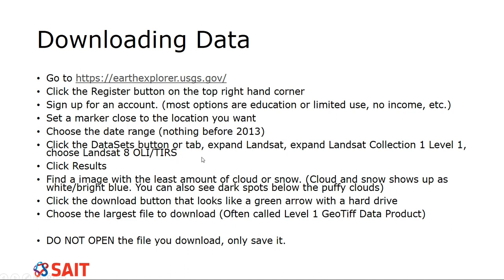Sometimes I encourage people to go back further. If you do want to go back further, please talk to me. I have no problems with helping you out with the data from before that. But there's really nothing from 2003 to 2013. Just because the scan line corrector on Landsat 7 broke. But anyway, then you're going to go to the data sets button or tab. You're going to expand Landsat and then you're going to expand Landsat Collection 1 level 1. You're going to choose like a little check mark in the box, Landsat 8 OLI/TIRS tiers. Then you're going to click on results. It's a button.